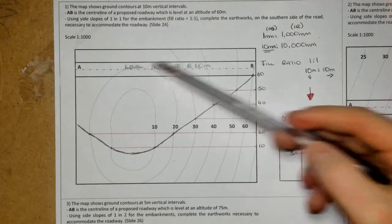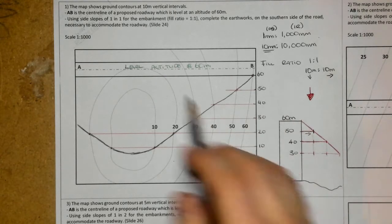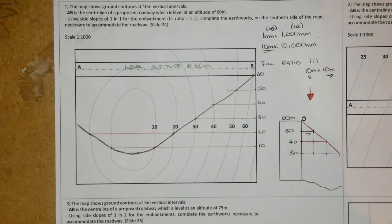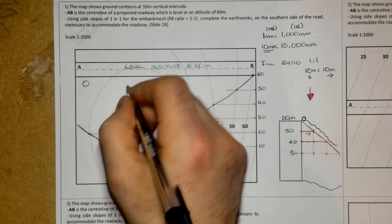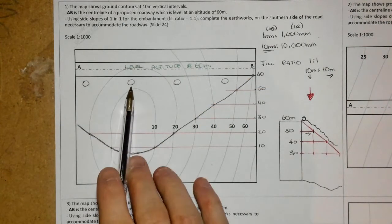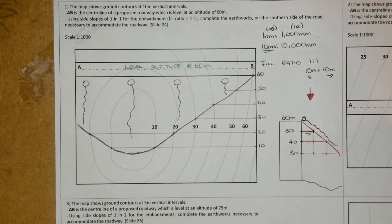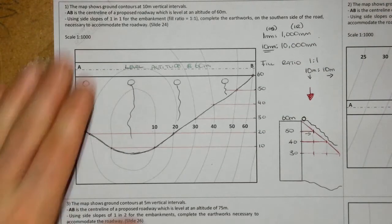Once the points are plotted, sketch along them to complete the fill outline. We indicate a fill using 'tadpoles': imagine placing a ball at the top of the road — gravity rolls it down the hill away from the road. We draw small tails in that direction to show the slope going downward away from the road. That's the first question done.